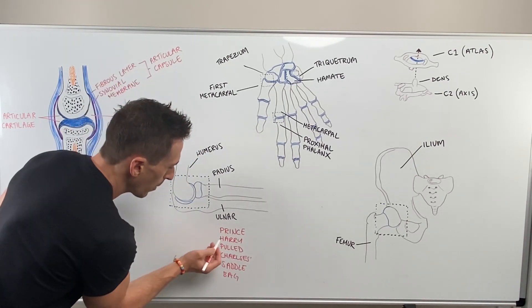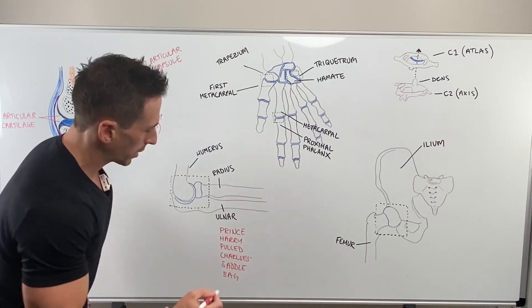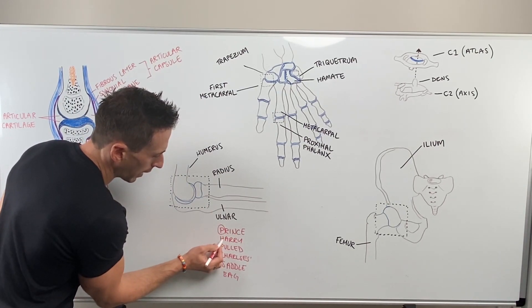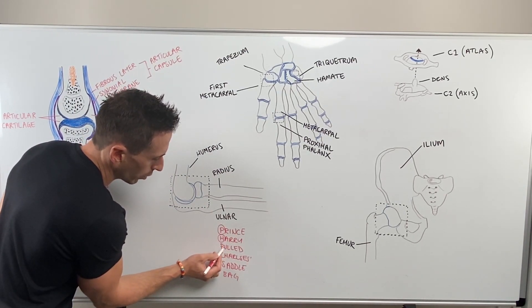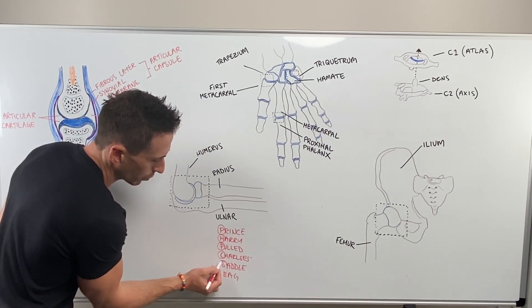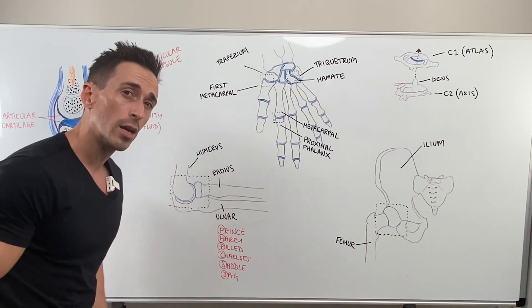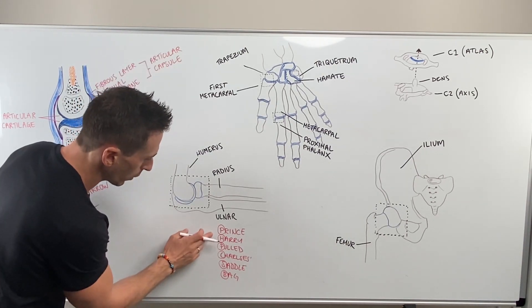Take the first letter of each word in the mnemonic, and that gives you the first letter of each of the six synovial joint types. So what are the six synovial joints? P is planar, H is hinge, P is pivot, C is condylar, S is saddle, and B is ball and socket.